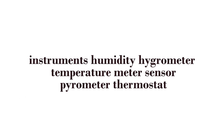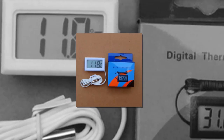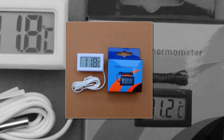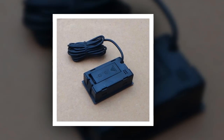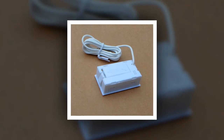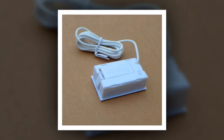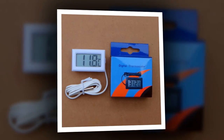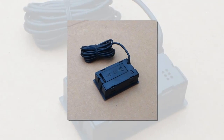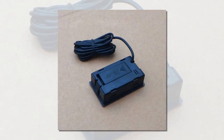Here is product number two: humidity hygrometer temperature meter thermostat. Modeling is simple and elegant with LCD panel, inline connections, moisture resistant, strong anti-interference. Applies to refrigerated cabinets, display counters, and other equipment needing temperature measurement and display. Temperature range -50 to 110 degrees Celsius. Temperature display resolution 0.1 degrees.